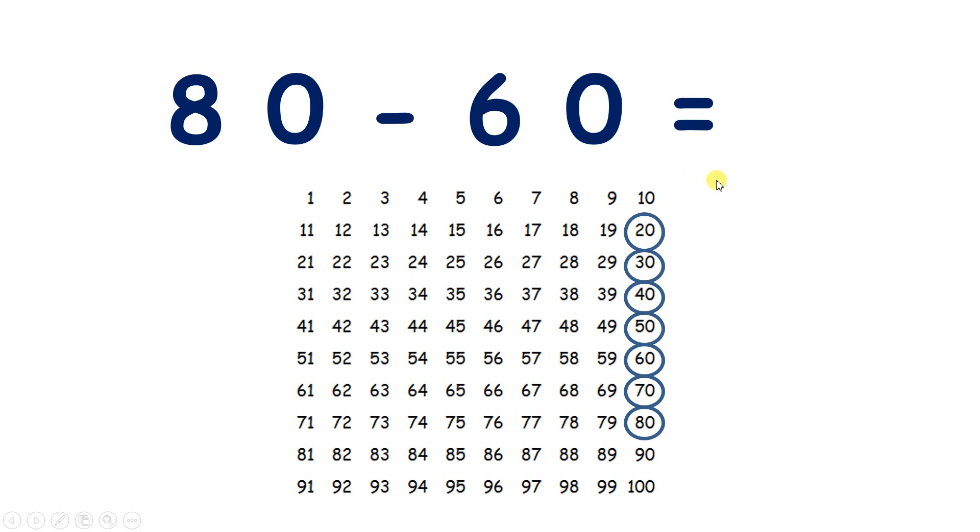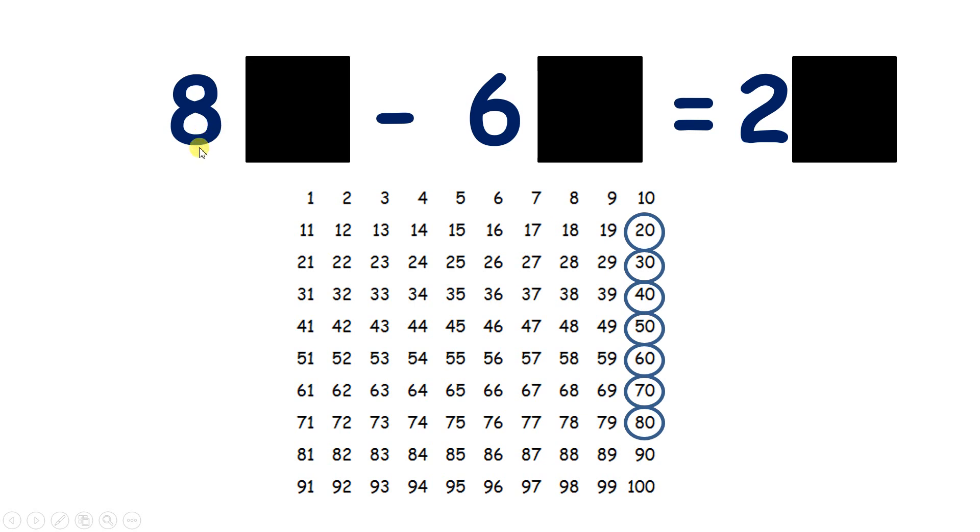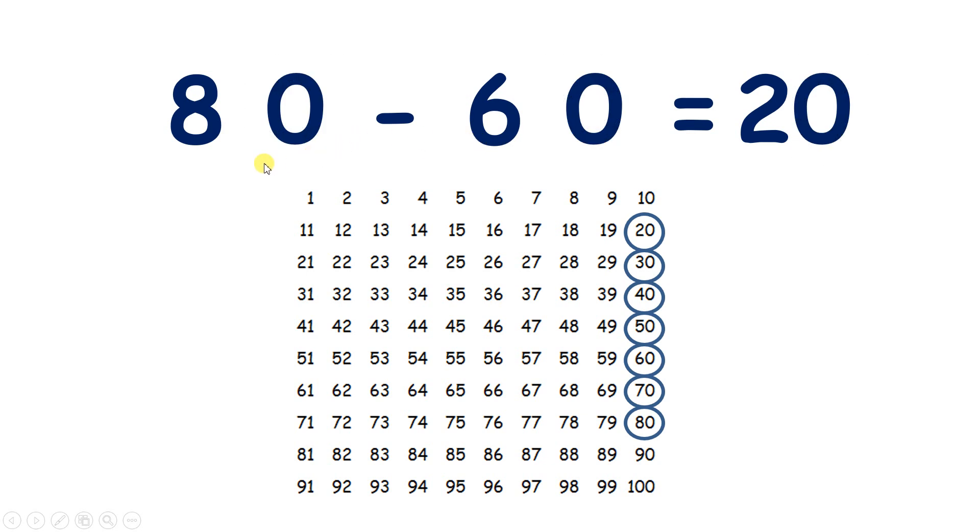So 80 minus 60 is 20, but we don't really need a 100 square for this. How could you subtract 60 from 80 mentally? Well, if you know that 8 minus 6 is 2, then you know that 8 tens minus 6 tens is 2 tens, or 20.